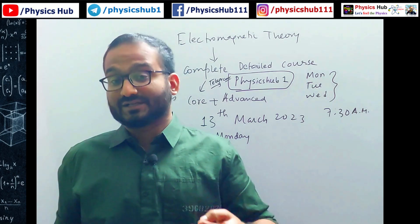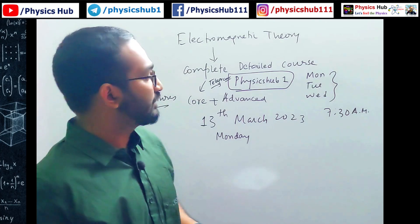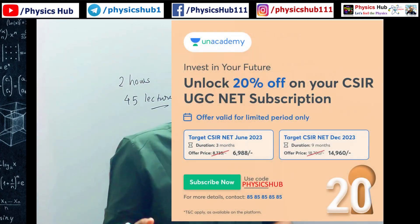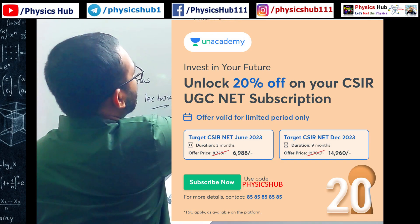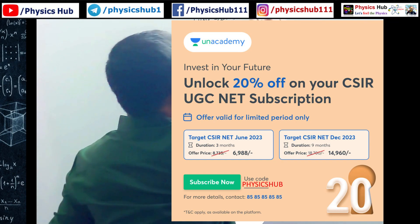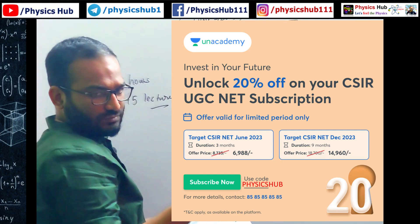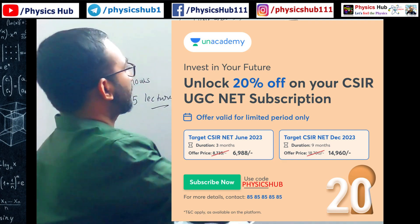And guys, a special offer is going on for the Unacademy Plus subscription. If you are preparing for the June 2023 examination, so you know this year two exams are likely to happen: June 2023 and as well as December 2023. So if you are willing to give this June, if you are targeting for June 2023, you have almost three months left, so you can go for the three month subscription.